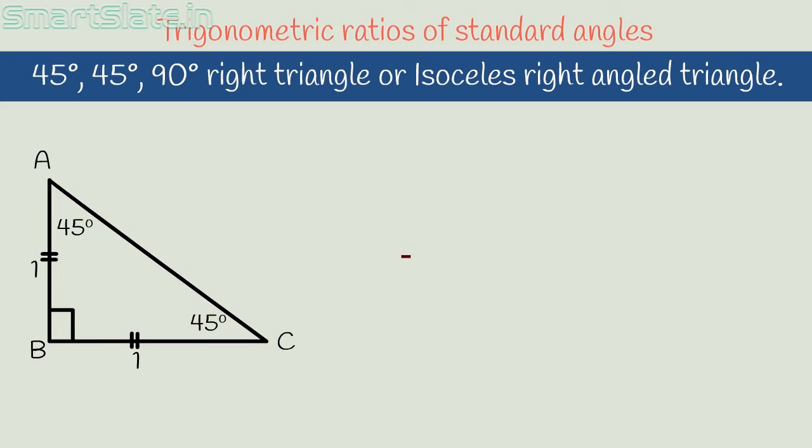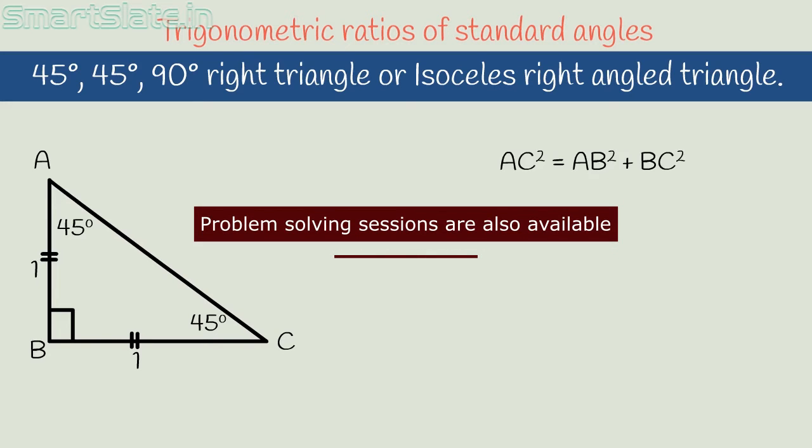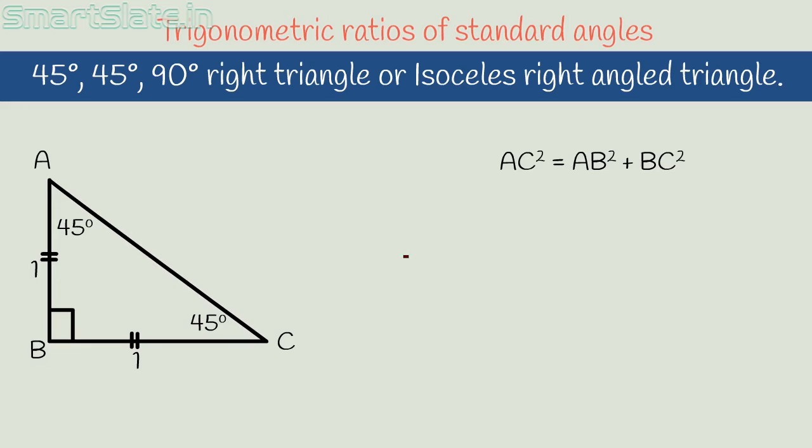According to Pythagorean theorem, AC² is equal to AB² plus BC². Substituting the values, AC² equals 1² plus 1², which is 1 plus 1 equals 2. So AC² equals 2. That means AC equals square root of 2.